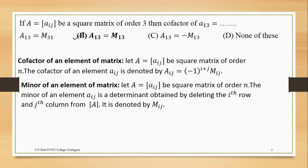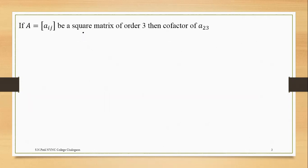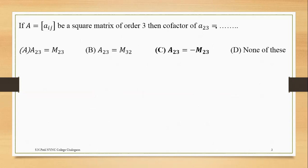The second question is similar. The co-factor of A23: the sum is 2 plus 3 equals 5, which is odd. Therefore the answer is capital A23 is equal to minus M23.